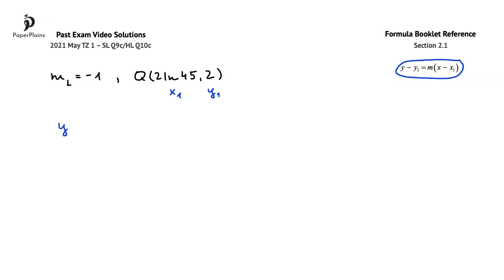Substituting, we get that y minus 2 is equal to negative 1 times x minus 2 ln 45.